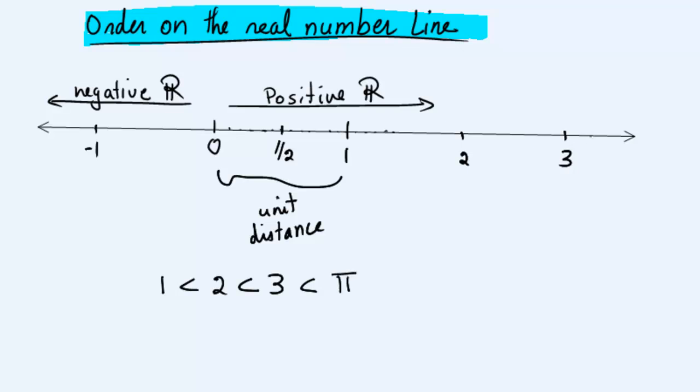Of course, π is approximately 3.14, so it's going to go about here. We notice that 3 is to the left of π, and π is less than 4. So on the number line, the numbers to the left are less than the numbers to the right.